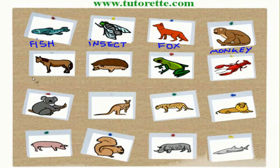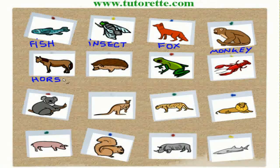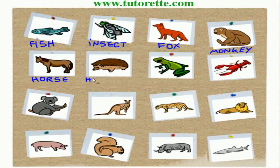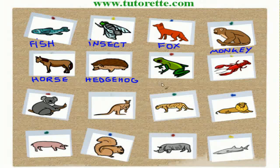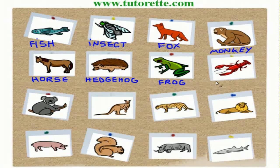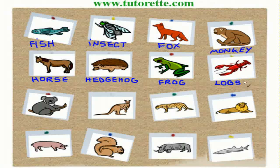This is a horse. H-O-R-S-E. Horse. Hedgehog. H-E-D-G-E-H-O-G. The frog. F-R-O-G. Frog. Lobster. L-O-B-S-T-E-R. Lobster. Here we have the koala.